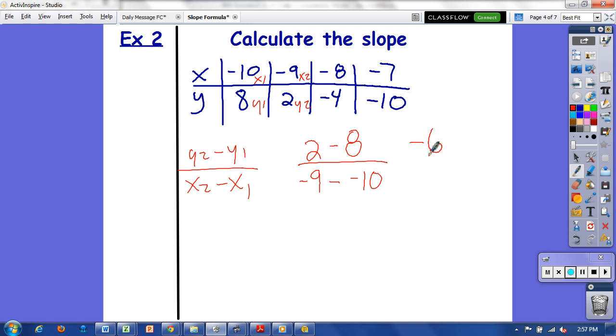2 minus 8 is negative 6. Negative 9 minus negative 10 is really saying negative 9 plus 10, so that's going to give me a positive 1. So negative 6 over 1 is my slope, or negative 6. No need for simplification on that one.